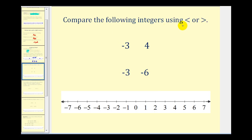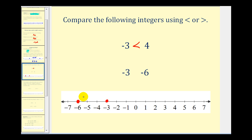We want to compare the following integers using less than or greater than. Let's plot these two on the number line. Negative three is here, positive four is here. Since negative three is to the left of positive four, negative three is less than positive four. For the next example, we want to compare negative three and negative six. Negative three is to the right of negative six. Therefore, negative three is greater than negative six.